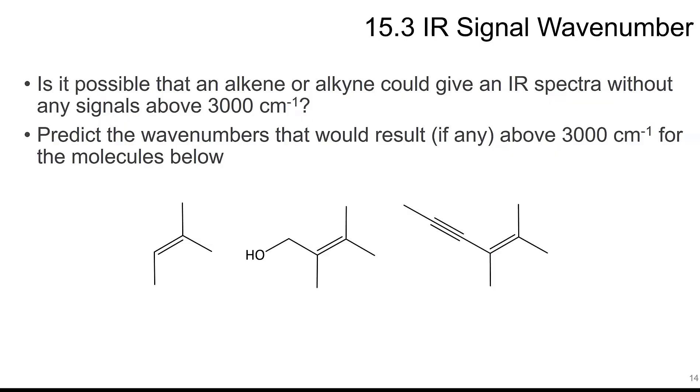So is it possible that an alkene or an alkyne could give an IR spectra without any signals above 3000 wave numbers? It is possible. If you remember, the alkene or alkyne, the signals around 3000 are for carbon hydrogens. If we're predicting these now, this molecule right here will have these SP3 CHs. Those are less than 3000. And it also has one CH that is SP2. So that one will be above 3000.